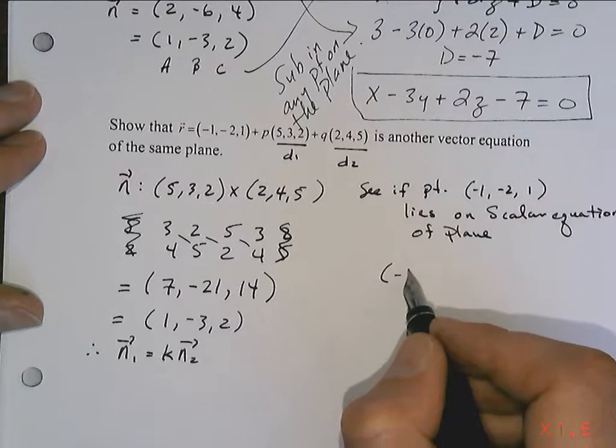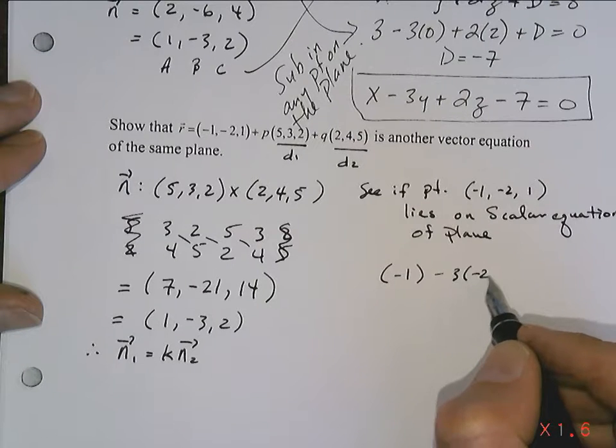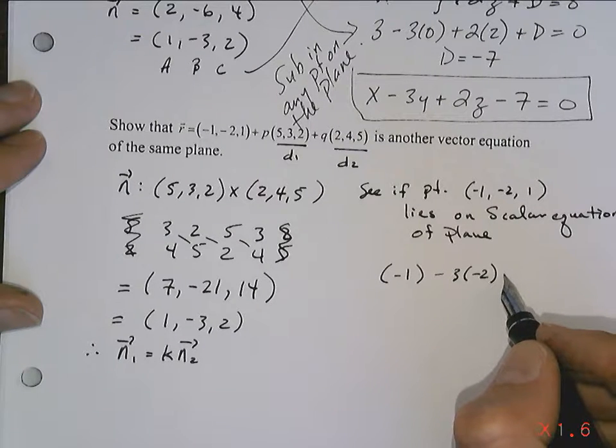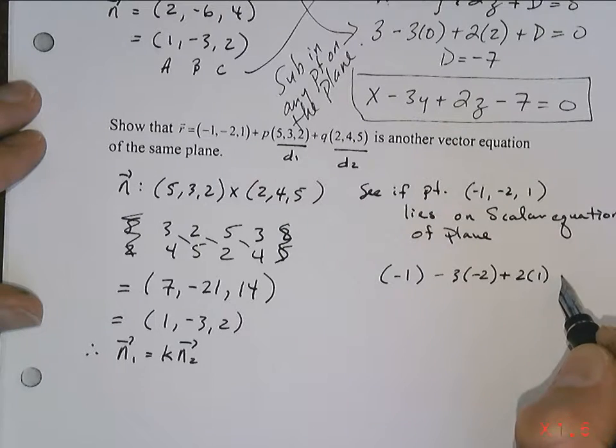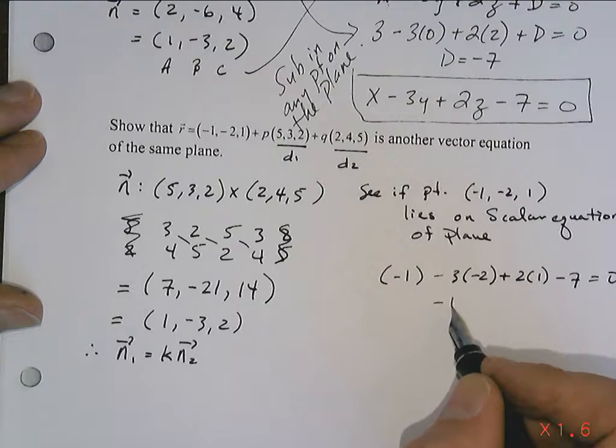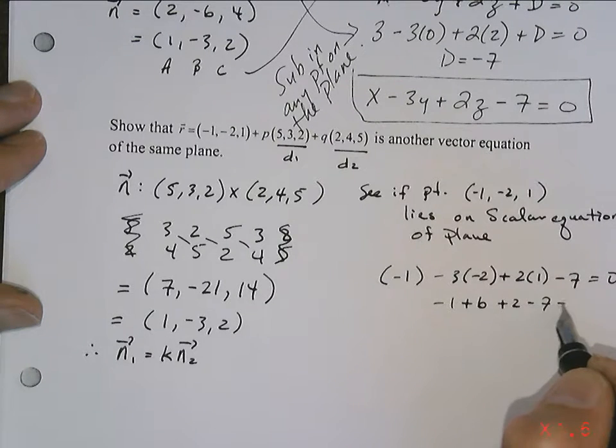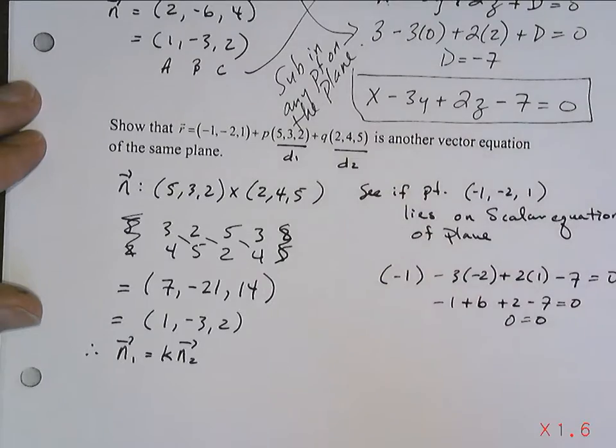So it's going to be negative 1, negative 2, plus 2, negative 7 equals 0. So we get negative 1, plus 6, plus 2, minus 7. Last time I checked, that works. So therefore,